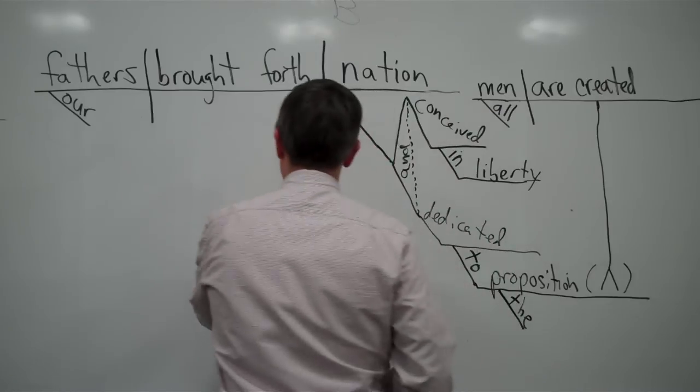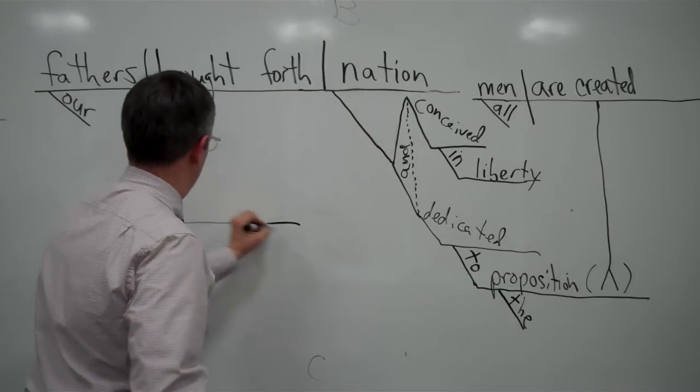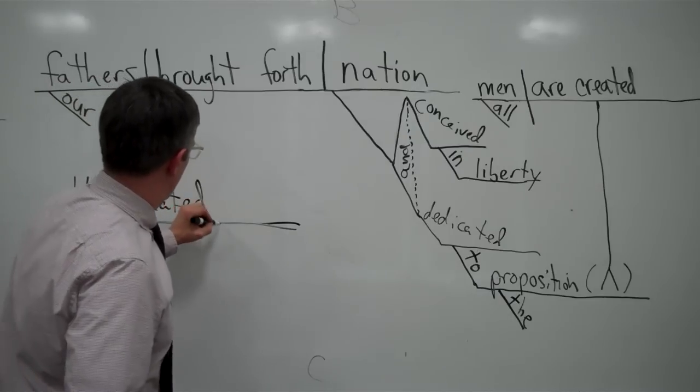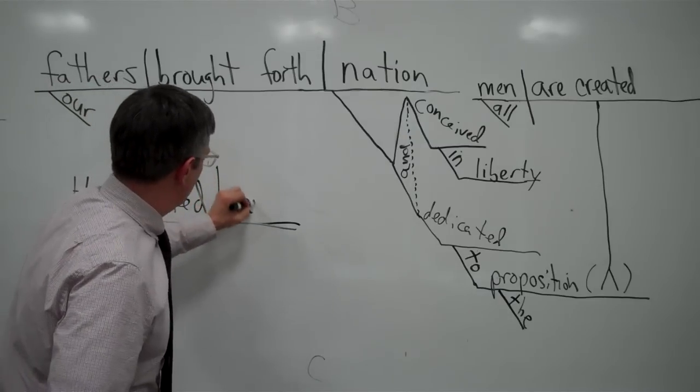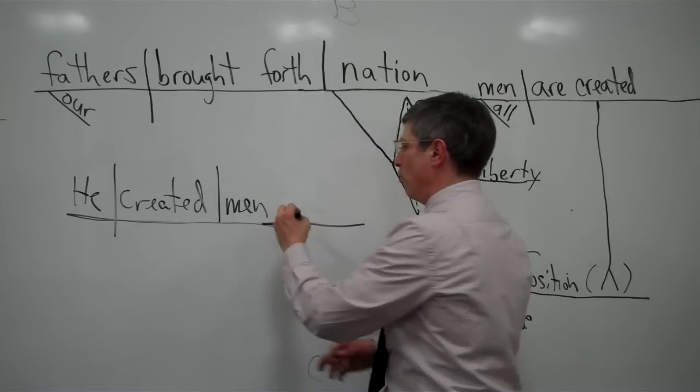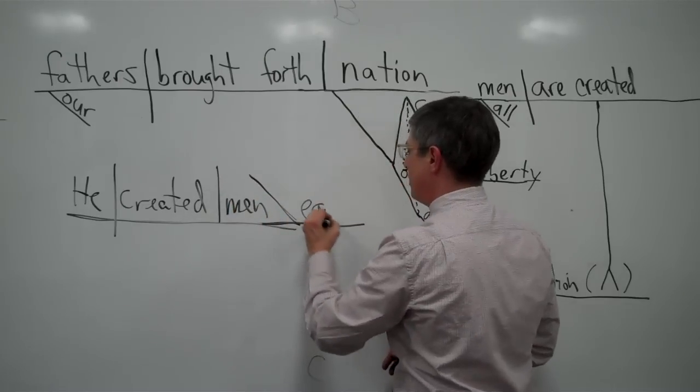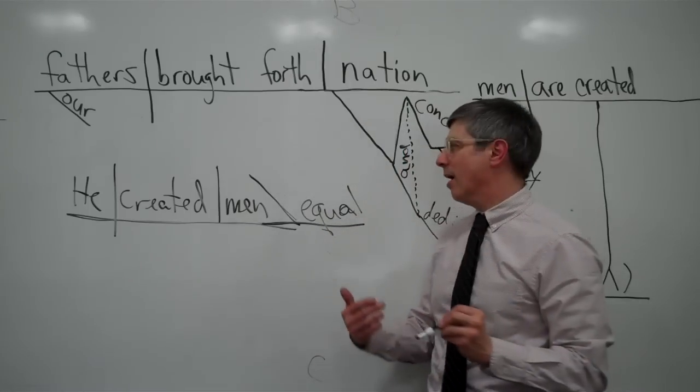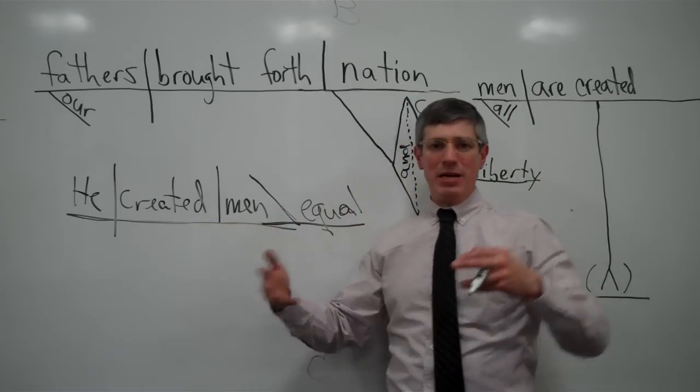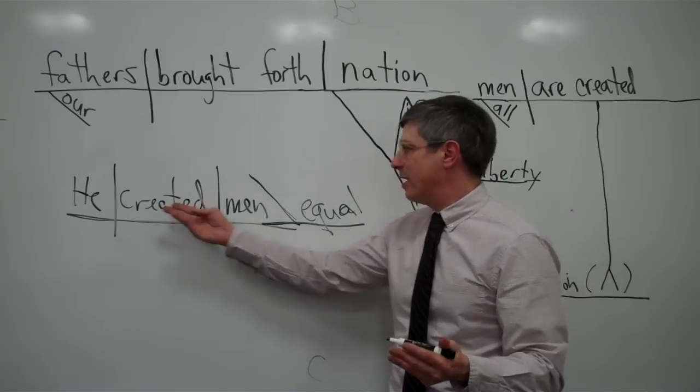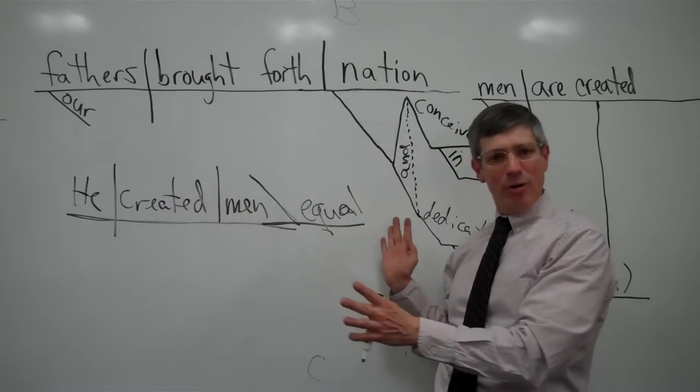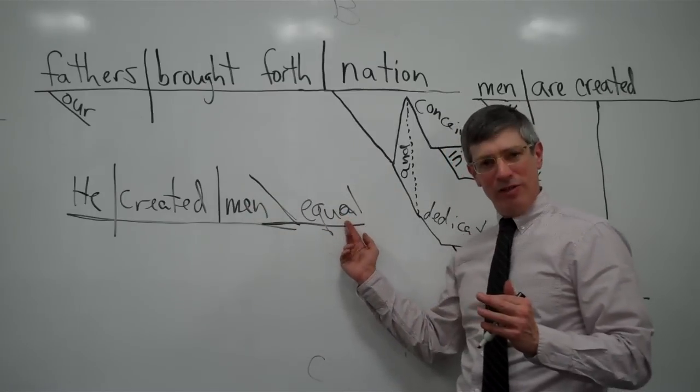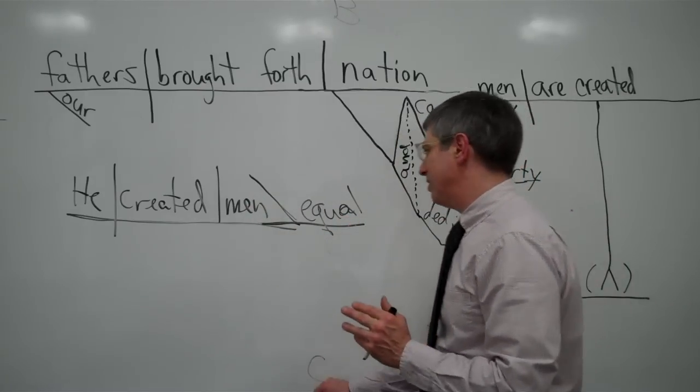And what equal would be, would be the objective complement. He created them equal. So that would be he made me happy. He created, or he made me would be diagrammed the same way. He created men equal. So this thing is an objective complement when it's expressed in the active voice.